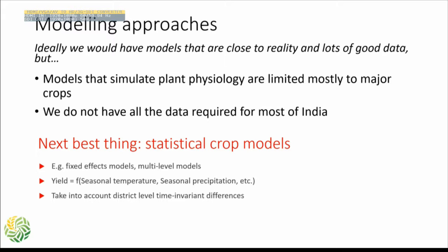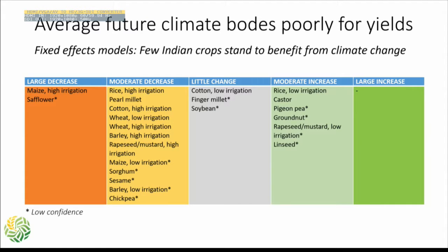When she did that, she found that using the fixed effects models, there are very few Indian crops that stand to benefit from climate change — meaning pretty much all crops have a negative impact from climate change, both from temperature and precipitation points of view. The few crops where there was a moderate increase were not statistically significant. Most statistically significant relationships were negative. Her work was able to move beyond the main staples and look at various other crops in India's food system.